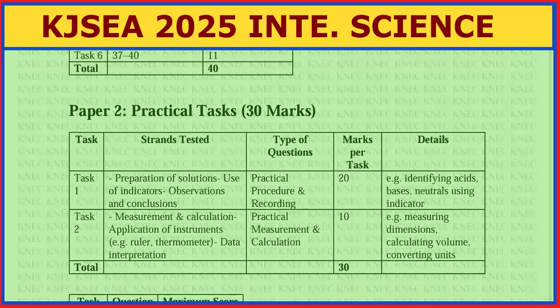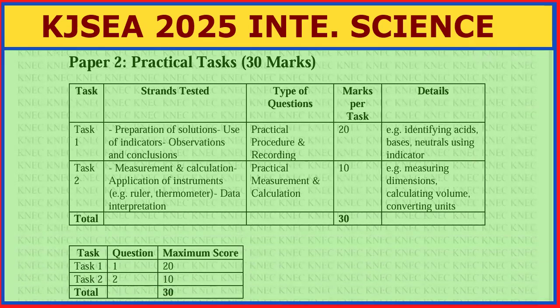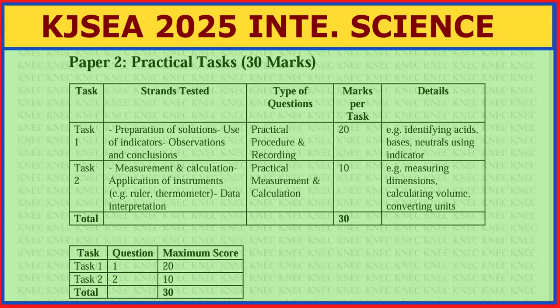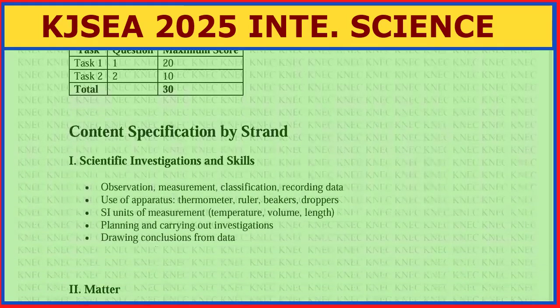In the practical tasks: Task One is preparation of solutions and use of indicators for observations and conclusions. It covers practical procedure and recording, identifying acid, base, or neutral using indicators — worth 20 marks. Task Two covers measurement and calculation, application of instruments such as ruler and thermometer, and data interpretation. You will be allowed to use an unprogrammable calculator. Task Two is worth 10 marks, giving 30 marks total for the practical paper.